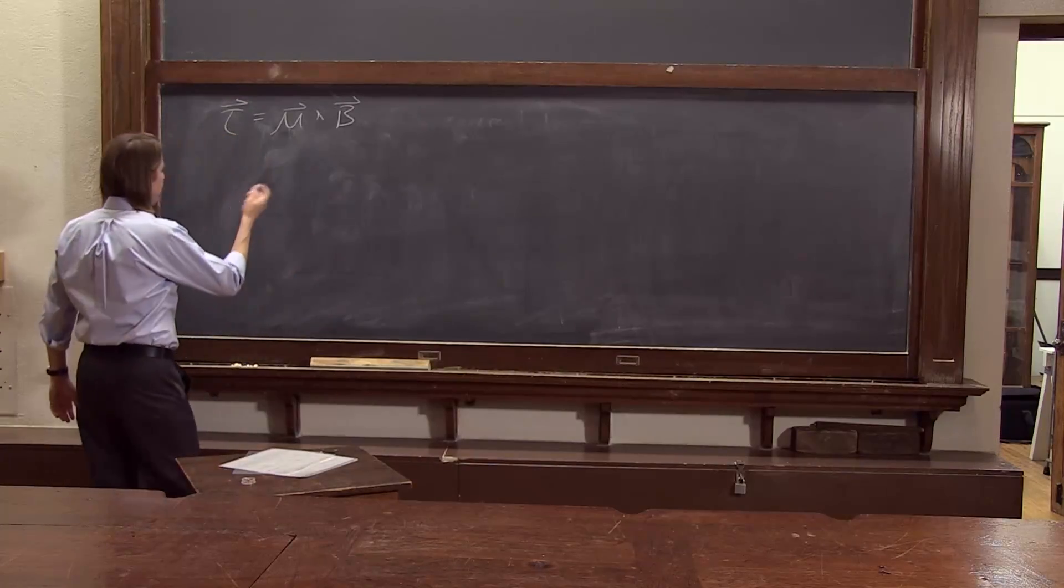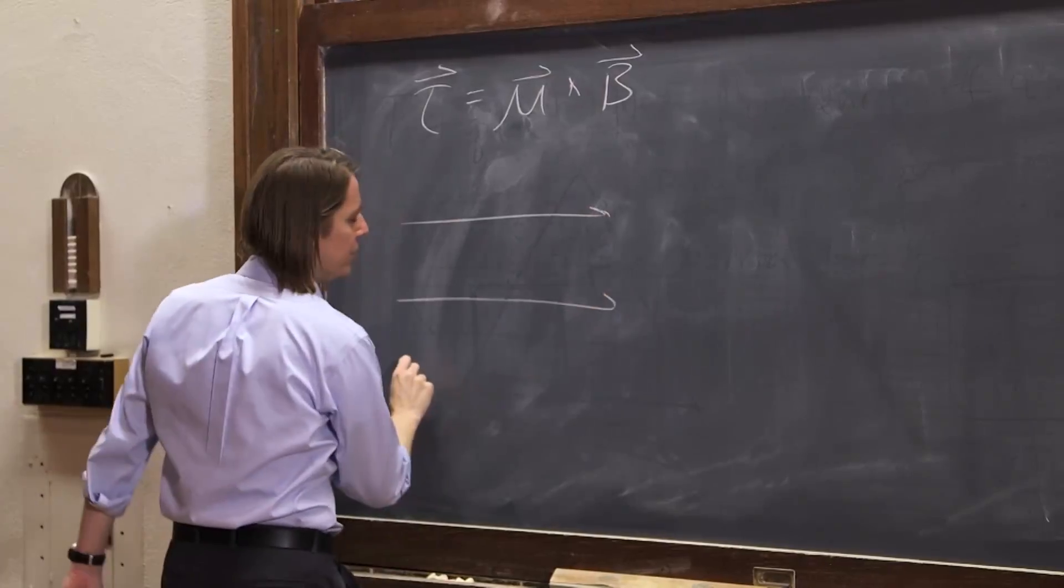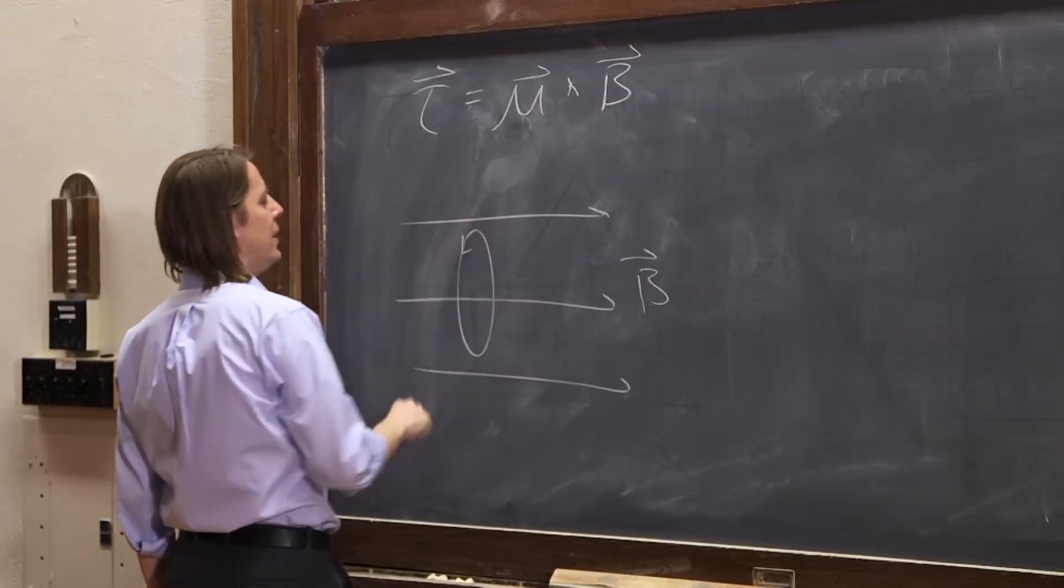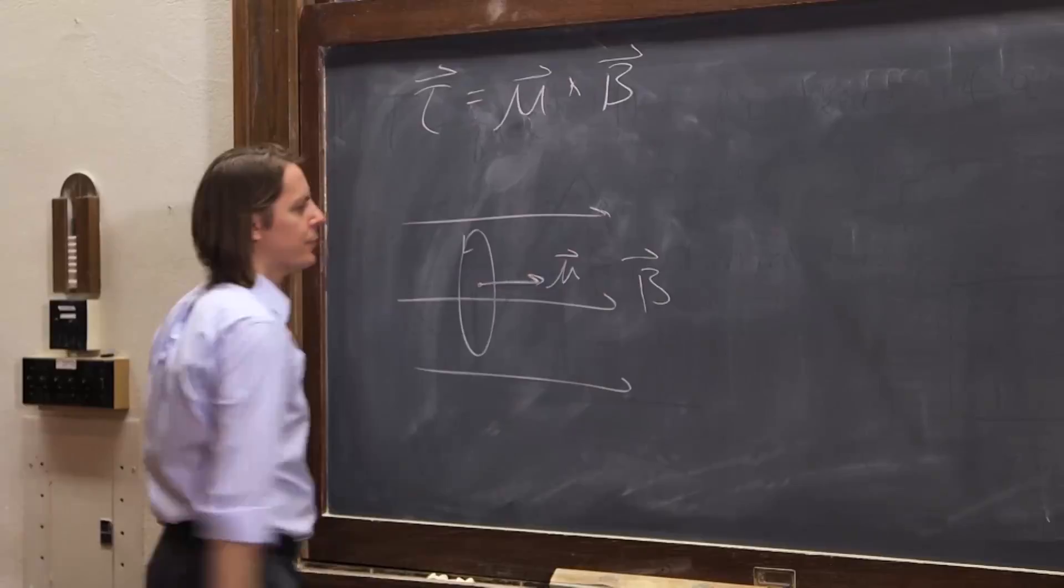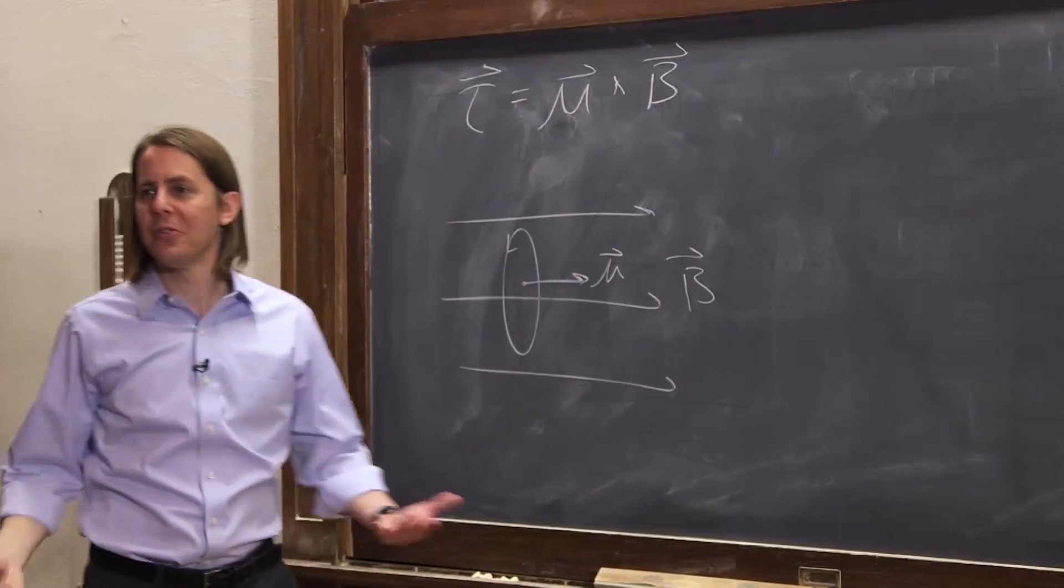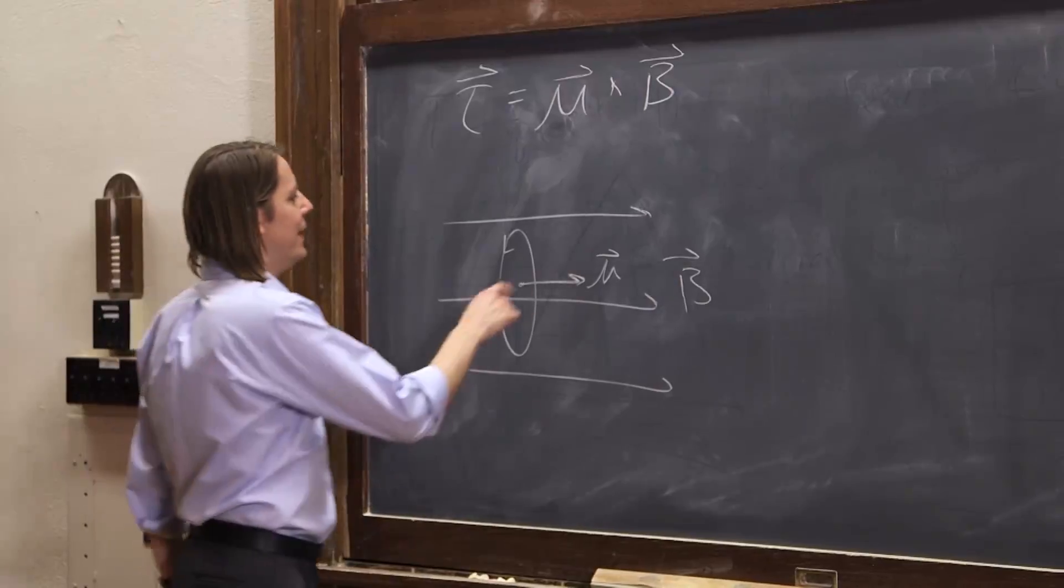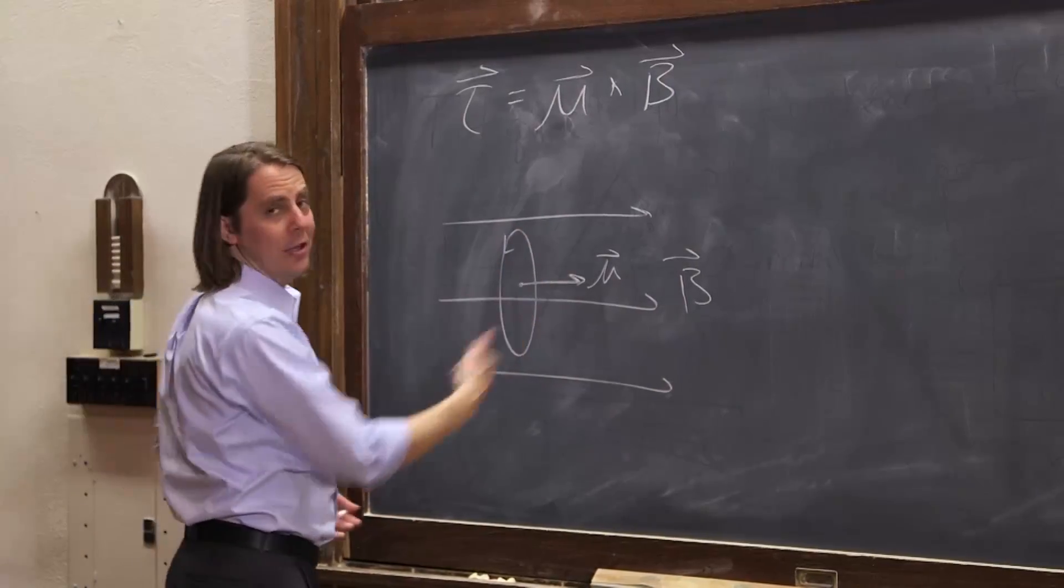Let's think about a few moments. If we have a B field going to the right and a current loop in the plane of the board, we'll often abbreviate it just 'moment' rather than magnetic moment or magnetic dipole moment. Current goes around, so by the right-hand rule, the moment is this way.